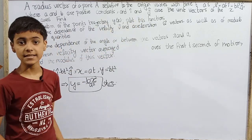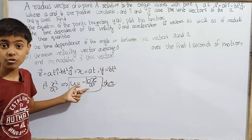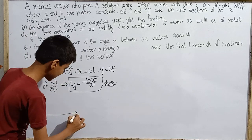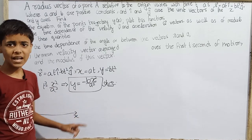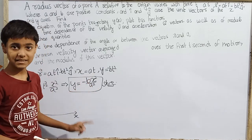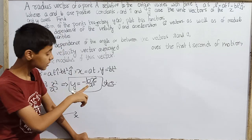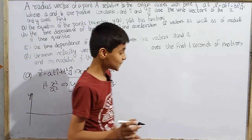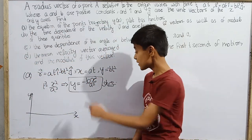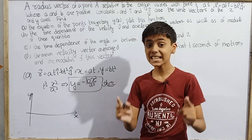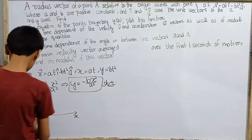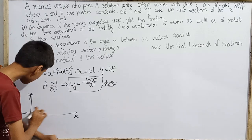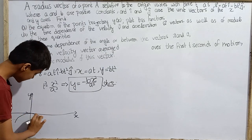Now we need to plot this function. Setting up axes with y vertical and x horizontal, the equation y equals minus b·x²/a² is the equation of a parabola. Since there is a negative sign and b, a² are all positive, this is a downward-opening parabola.